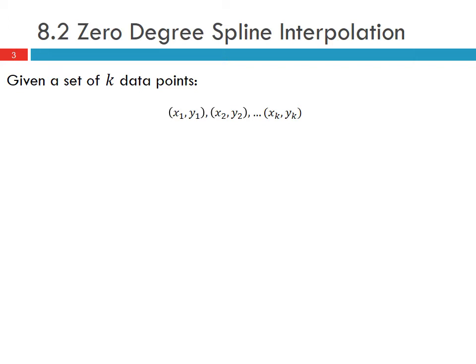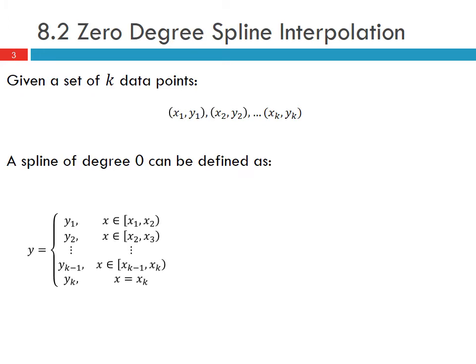So given a set of k data points (x1, y1), (x2, y2) up to (xk, yk), a spline of degree zero can be defined as shown here where on each sub interval